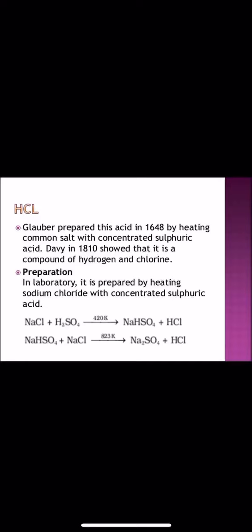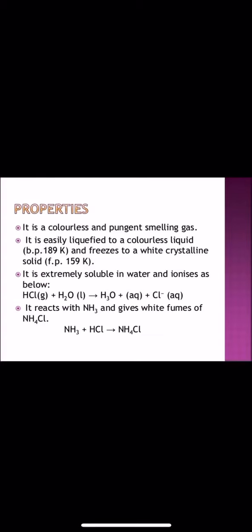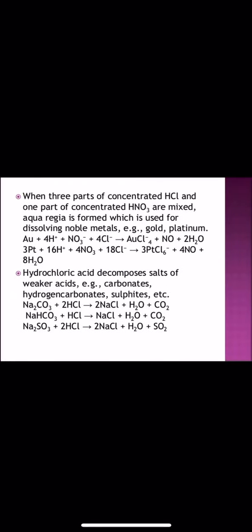HCl, hydrochloric acid is prepared. Glauber prepared this acid in 1648 by heating common salt with concentrated sulfuric acid. In the laboratory, it is prepared by heating sodium chloride with concentrated sulfuric acid. The properties of HCl: it is colorless pungent smelling gas, easily liquefied to colorless liquid, extremely soluble in water and reacts with ammonia to give white fumes of ammonium chloride. In the laboratory also, we do this practical. White fumes come out when you bring a glass rod dipped in HCl near the mouth of the test tube.